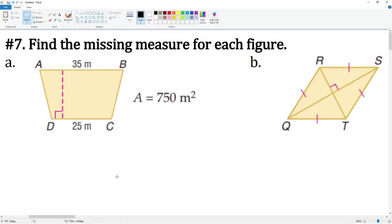Number seven: you're going to find the missing measurement of each figure. For seven a, we have a trapezoid. The area for a trapezoid is defined as A = 1/2(b1 + b2)h. We have base one which is 35, base two which is 25, but the height is missing.